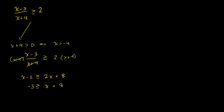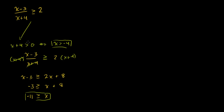I just took x from 2x, and then we can subtract 8 from both sides. You get minus 11 is greater than or equal to x. So if we assume that x is greater than minus 4, then x has to be less than or equal to minus 11. That seems a little bit nonsensical — x has to be both greater than minus 4 and less than minus 11. Anything greater than minus 4 is going to be greater than minus 11, so there's no x that satisfies this. If we assume x plus 4 is greater than 0, we just end up with a nonsensical solution, so we can ignore that path.